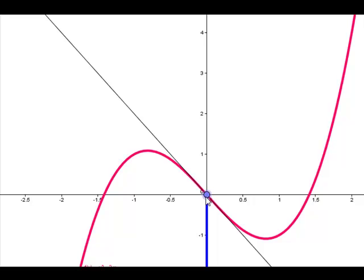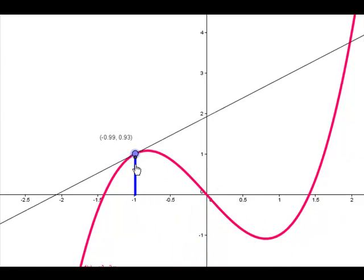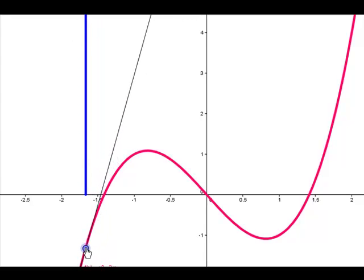What we're talking about now is the derivative as a function, because we have a unique output, the slope, for each input when we're talking about the derivative. So what we're going to do now is take a look at how the outputs change as we change the inputs.